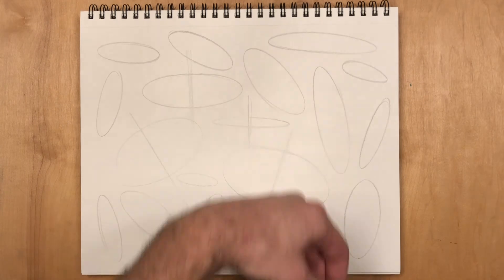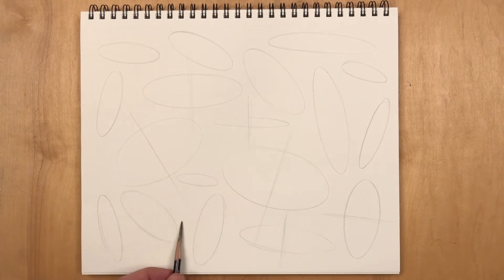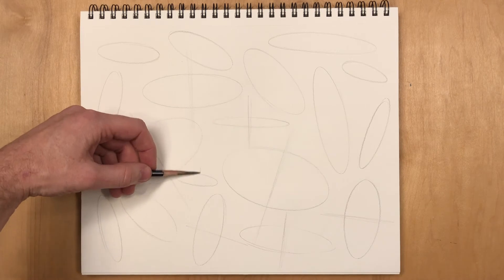So I'm just filling the page here with these ellipses, and then I'm going to go through and find their minor axes. So there's minor axis, there's the minor axis for that one, all the way throughout the page.